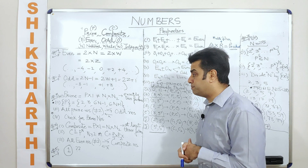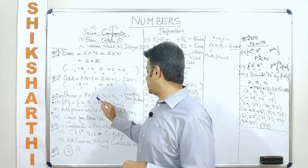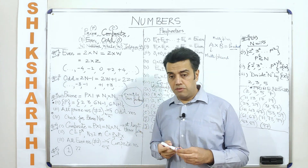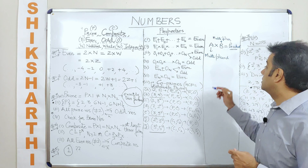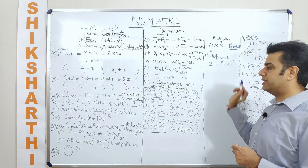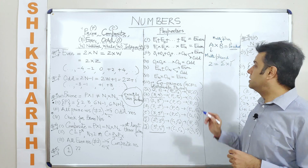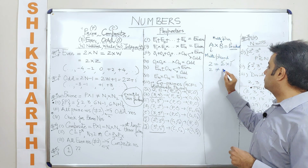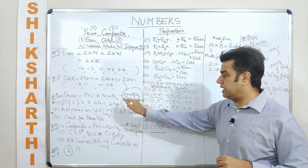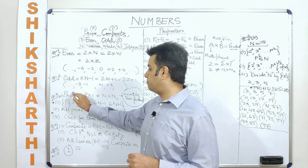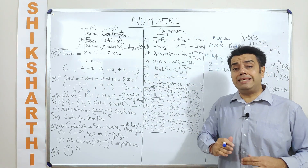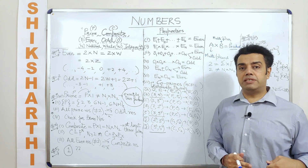The next thing we are going to discuss is prime numbers. What are prime numbers? Prime numbers are those numbers which have exactly two factors. Factors are those numbers which completely divide a number. For example, 2 is a prime number — it has exactly two factors: the number itself and 1. This is the definition of a prime number. A prime number cannot be written as a product of two different natural numbers other than 1 and itself. If P is a prime number, it will always be written as P × 1.